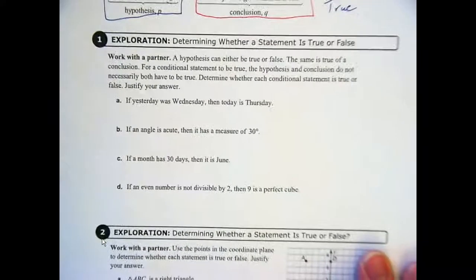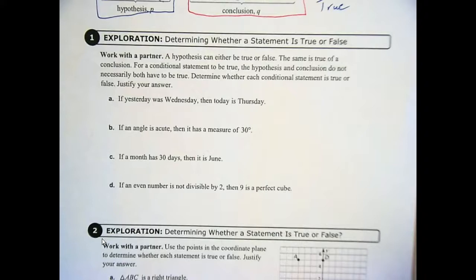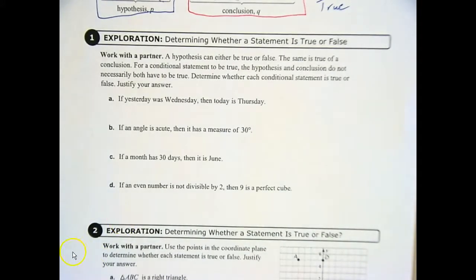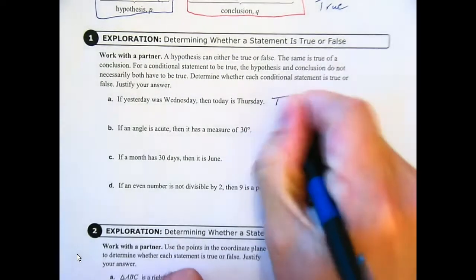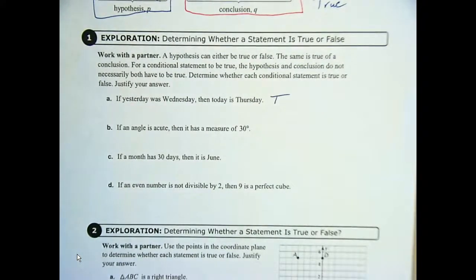In Exploration One, you're going to work together for a couple of minutes determining true or false. Number A: if yesterday was Wednesday, then today is Thursday. True or false? That is true. How do we know it's true? The day after Wednesday is always Thursday — that's how we know it's true.